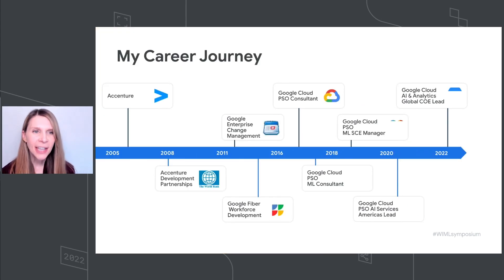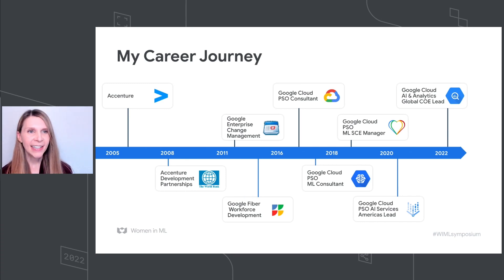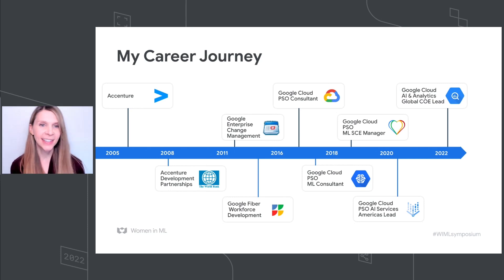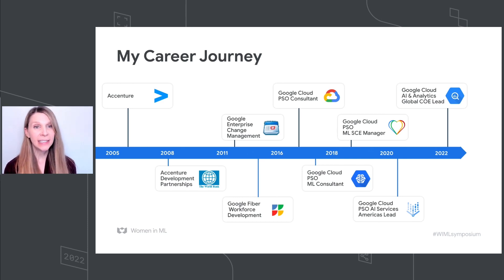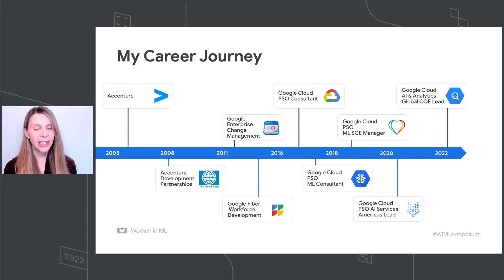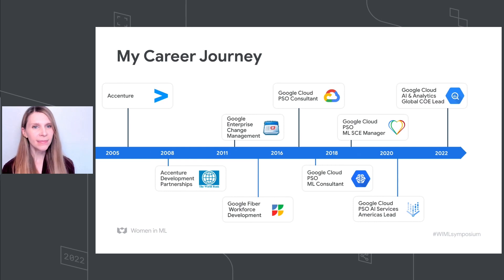I wanted to tell you a little bit about my personal career journey. It's definitely not been a linear one, and it's been one that has taken me in directions that I didn't expect — it's been a bit of a squiggly career. Just to give you a sense of how I got to where I am today in my role leading a team that does ML on Google Cloud Platform: when I first graduated from college, I didn't know what I wanted to do, but I knew I wanted to do something with technology. So I started off as a consultant at Accenture.